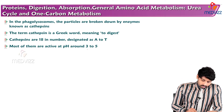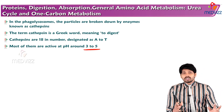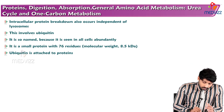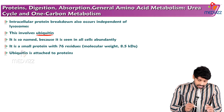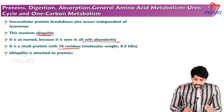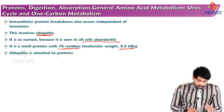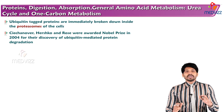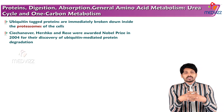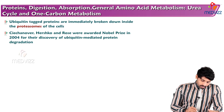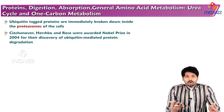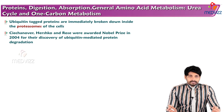Intracellular protein breakdown also occurs independent of lysosomes, involving ubiquitin. Ubiquitin is so named because it is present abundantly in all cells. It is a small protein with 76 amino acid residues and a molecular weight of 8.5 kilodaltons. Ubiquitin attaches to proteins whose half-life is over and targets them for breakdown inside the proteasomes of the cell. Ciechanover, Hershko, and Rose were awarded the Nobel Prize for their extensive work on ubiquitin-proteasome mediated protein degradation.